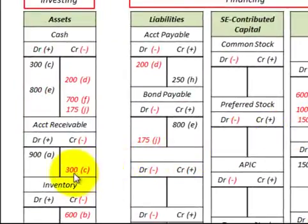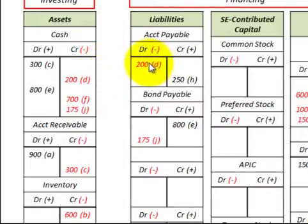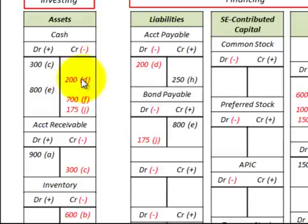Next, we received payment from our customer on accounts receivable. We reduce accounts receivable by $300 and increase cash by $300. Then we paid down on our accounts payable — we reduce accounts payable by $200 and reduce cash by $200.